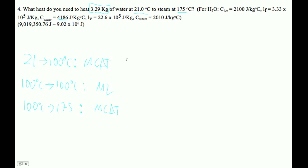Let's see. The mass is always 3.29 kilograms. C for the liquid is 4186, and then the delta T from 21 to 100 is 79. And that's joules per kilogram degrees Celsius.